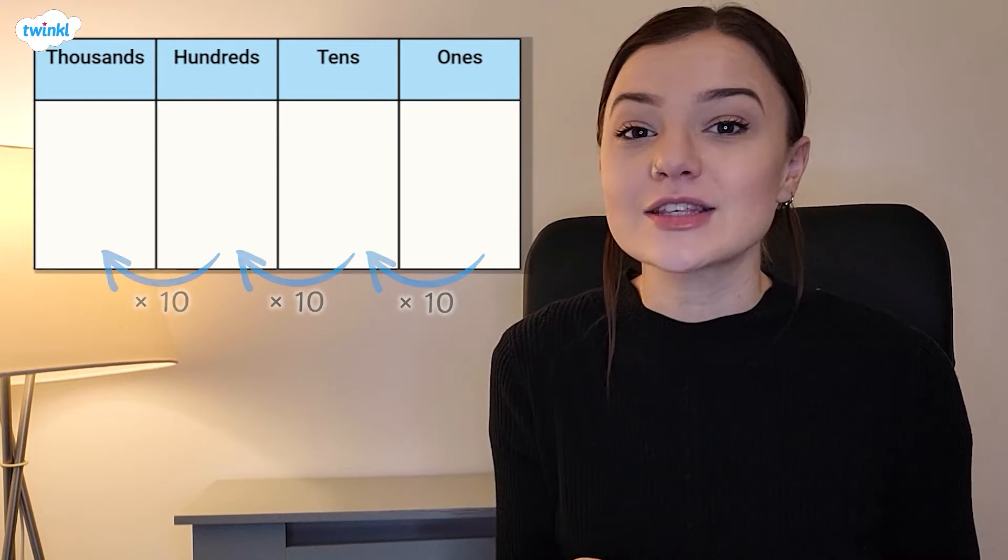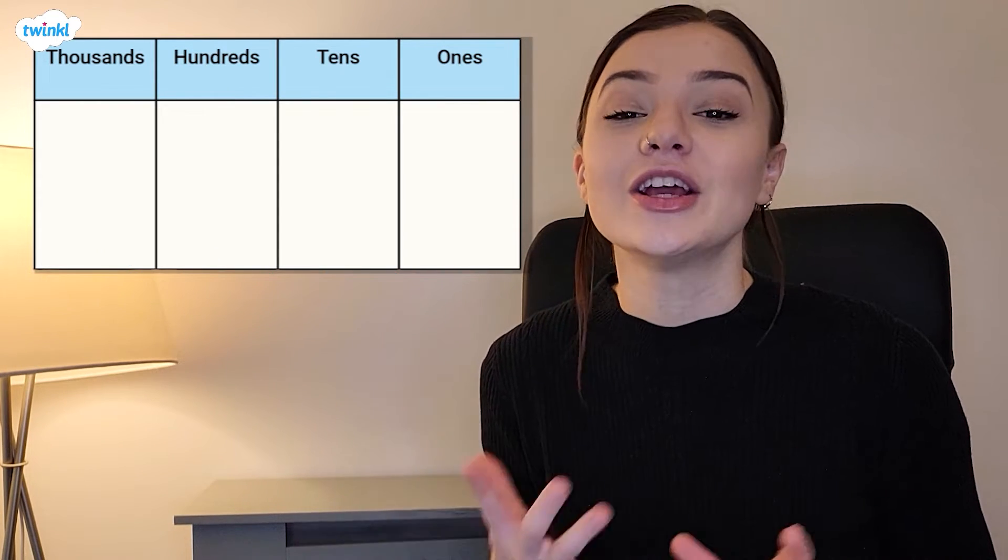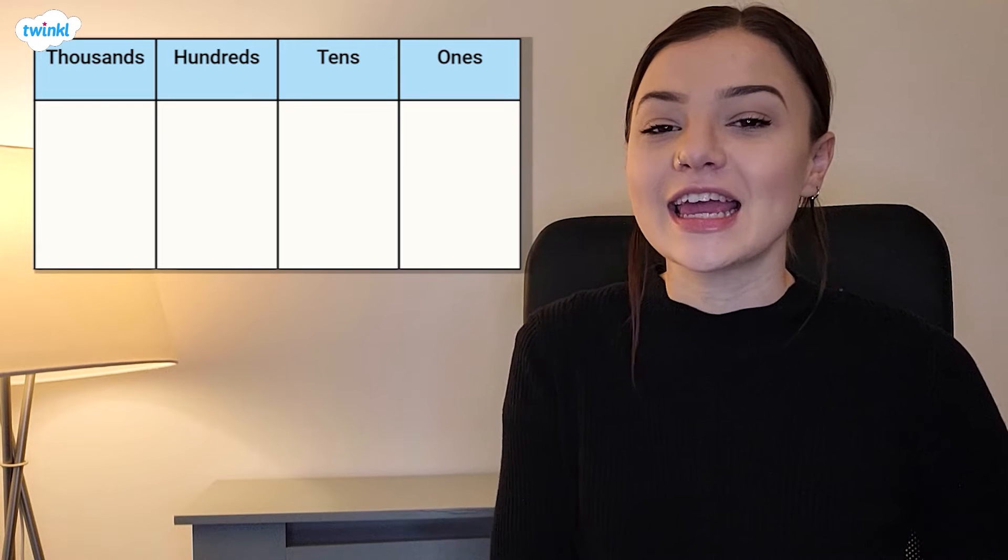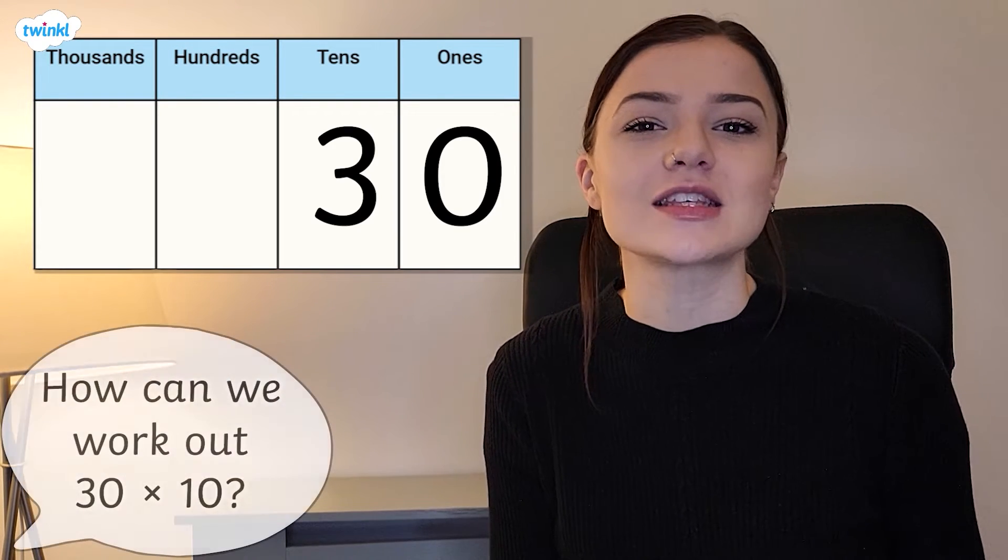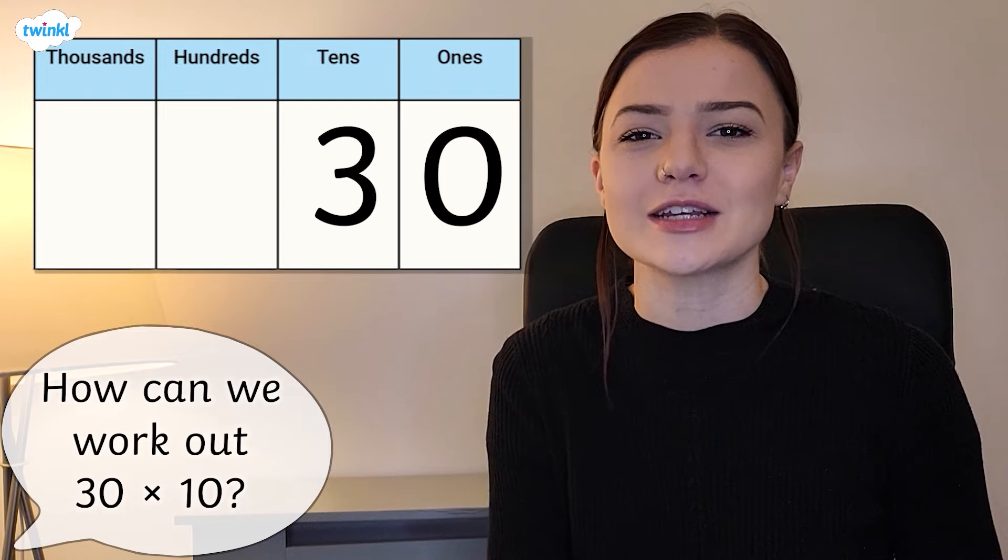Let's try to apply this knowledge by multiplying a number by 10 using the place value chart. Here is the number 30. How can we use the place value chart to work out 30 multiplied by 10?